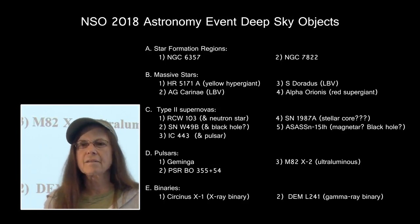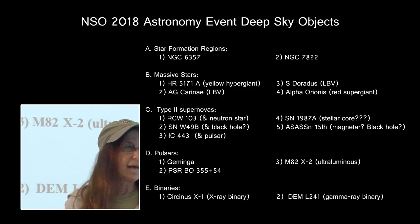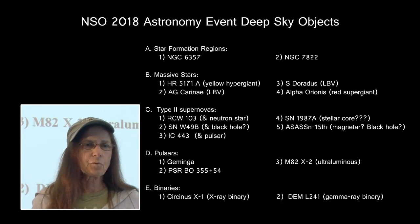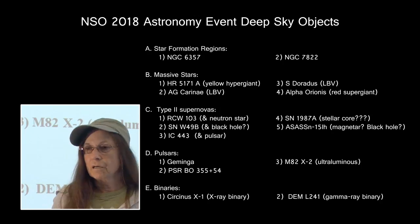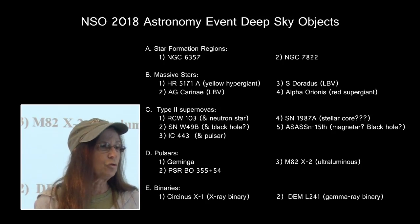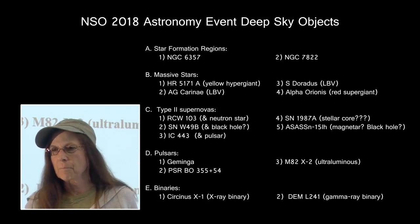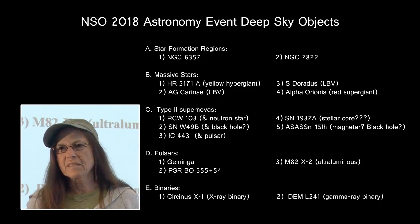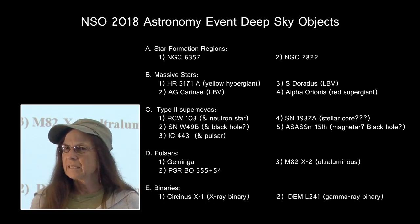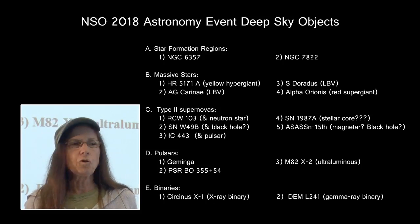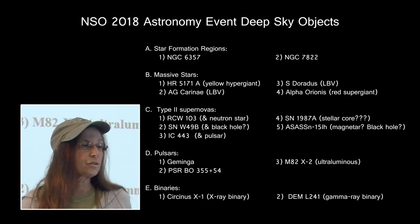In the 2018 event, if you look at the deep sky objects that were listed as required to have some knowledge about, you will see that there were two star formation regions, four massive stars, five Type II supernova events, three pulsars, and a couple of binary systems thrown in. Those deep sky objects all represent specific stages of stellar evolution that are related to massive stars evolving from formation to destruction.